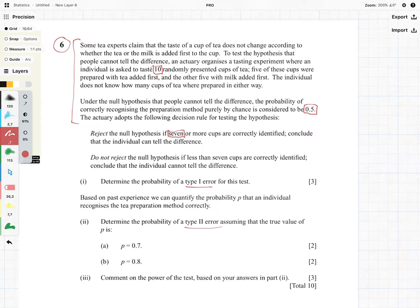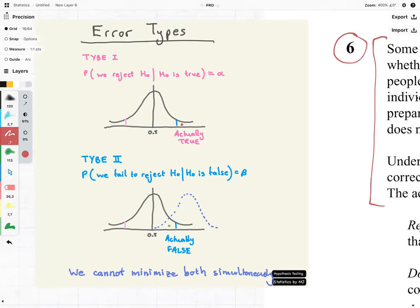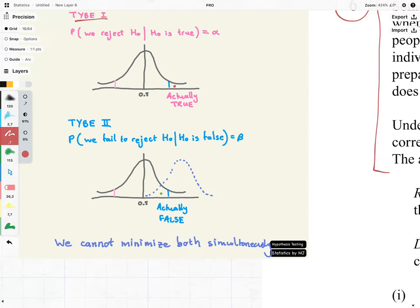Determine the probability of the Type I error for this test. Now just a very quick recap. These are the two types of errors that we can get in hypothesis testing. Type I is the probability we reject the null hypothesis given that the null hypothesis is true. And then we have Type II error which is the probability we fail to reject H0 given that H0 is false.